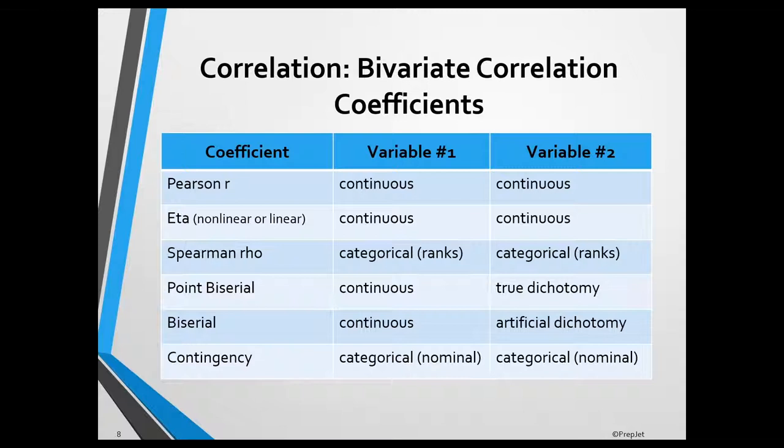The Pearson R, also known as the Pearson Product Moment Correlation Coefficient, is used when both variables are measured on a continuous scale and the relationship between the variables is linear. Assuming that there is a linear relationship between hours spent studying for the EPPP and EPPP score, the Pearson R would be the appropriate correlation coefficient for these two variables.